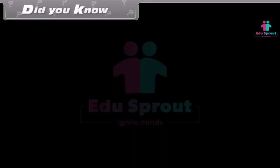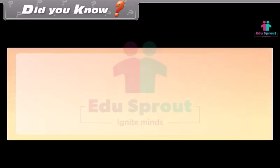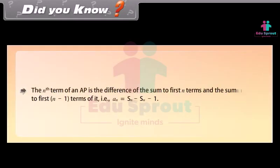Did you know? The nth term of an AP is the difference of the sum to first N terms and the sum to first (N minus 1) terms of it, that is, AN is equal to SN minus S(N minus 1).